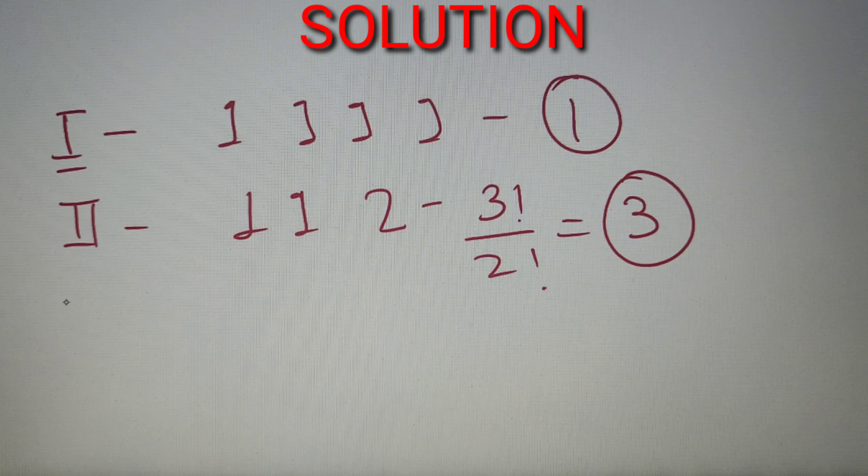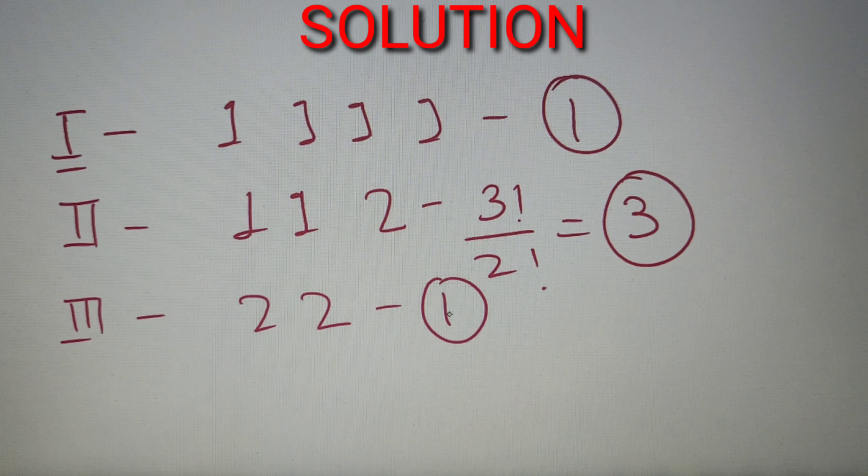Now let's move on to our third case. For this, let us consider that the person has taken two two-steps. So for this, there can be only one possible arrangement, so our answer will be one.